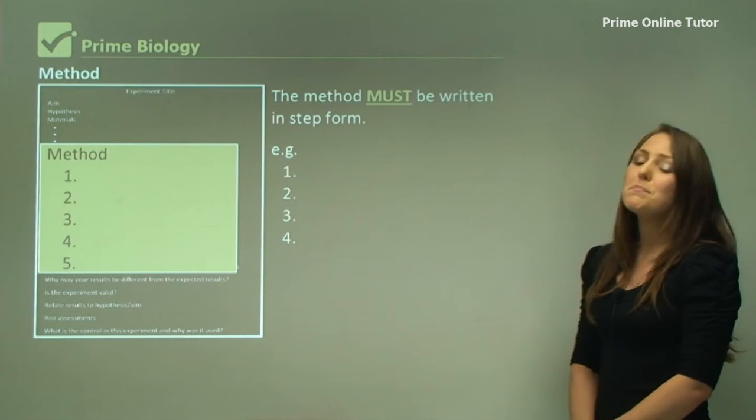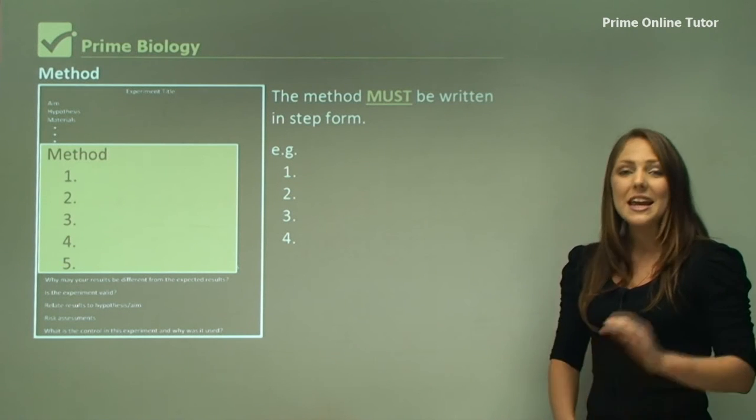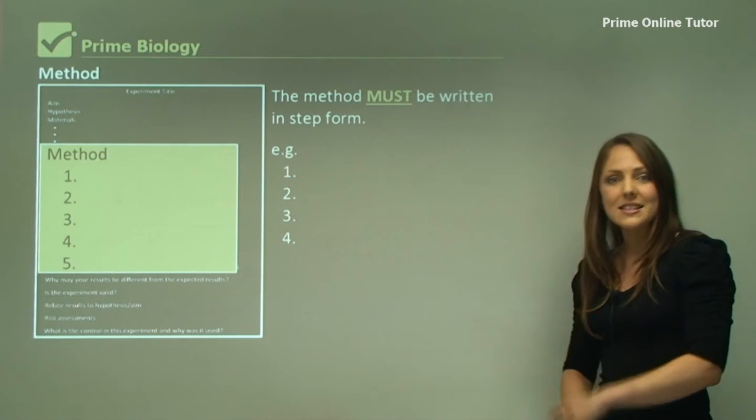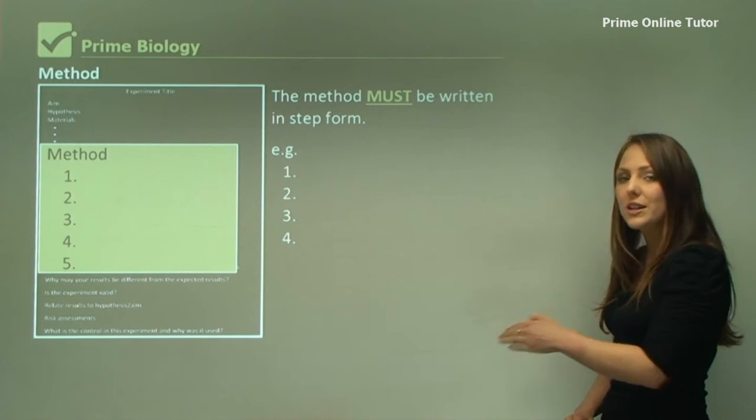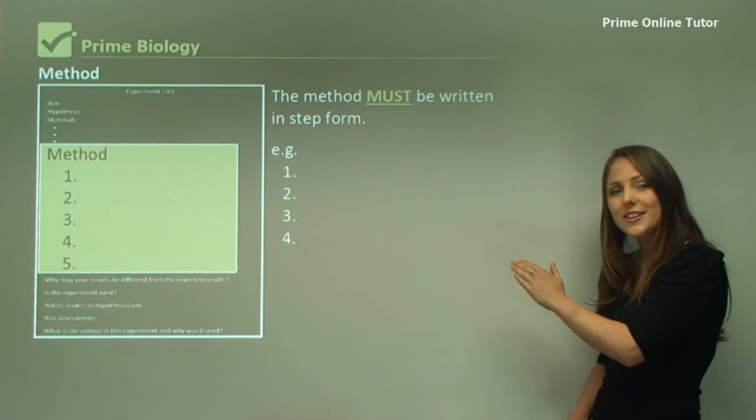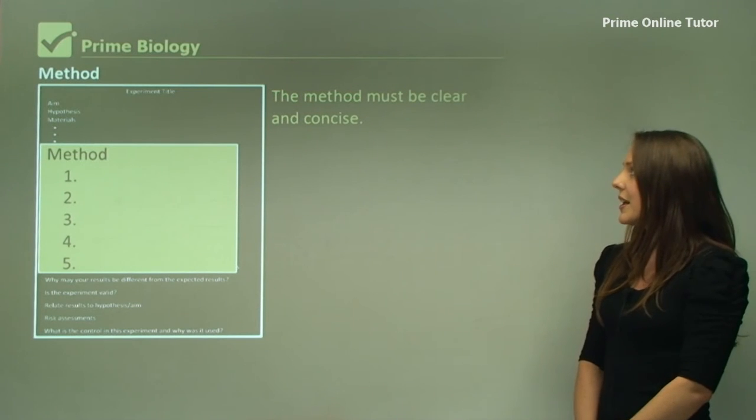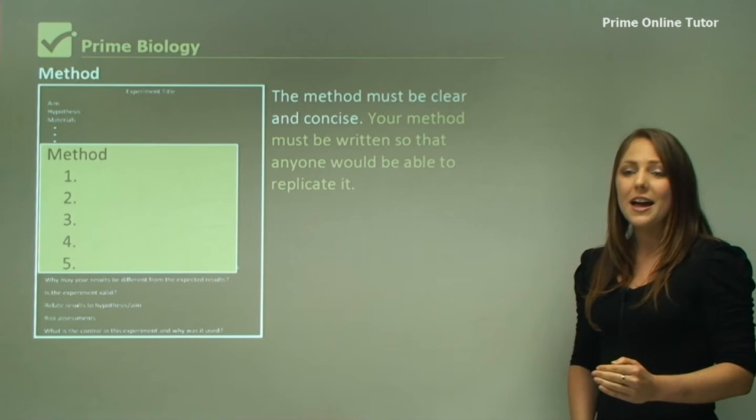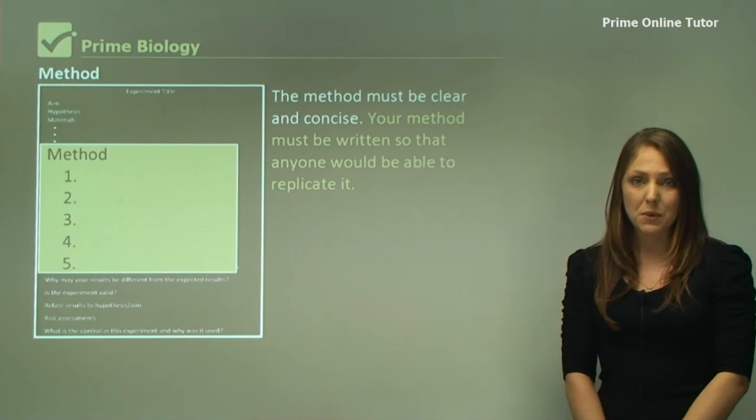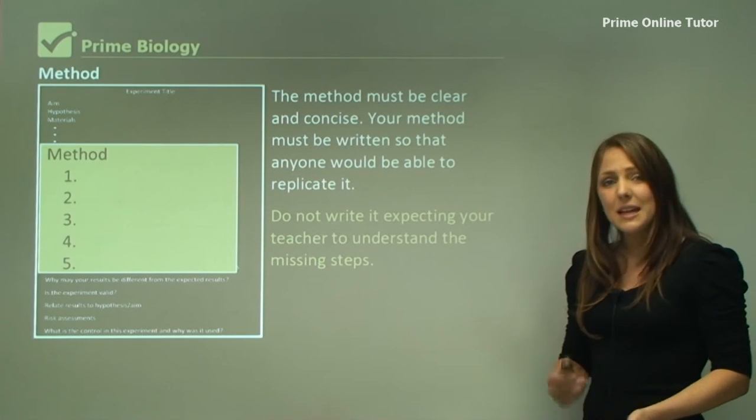The method must be written in step form, even in the last examination. It cannot be written in sentence form or dot points. It must be step one, step two, step three, and step four. It must be clear and concise, written so that anyone can redo that experiment.